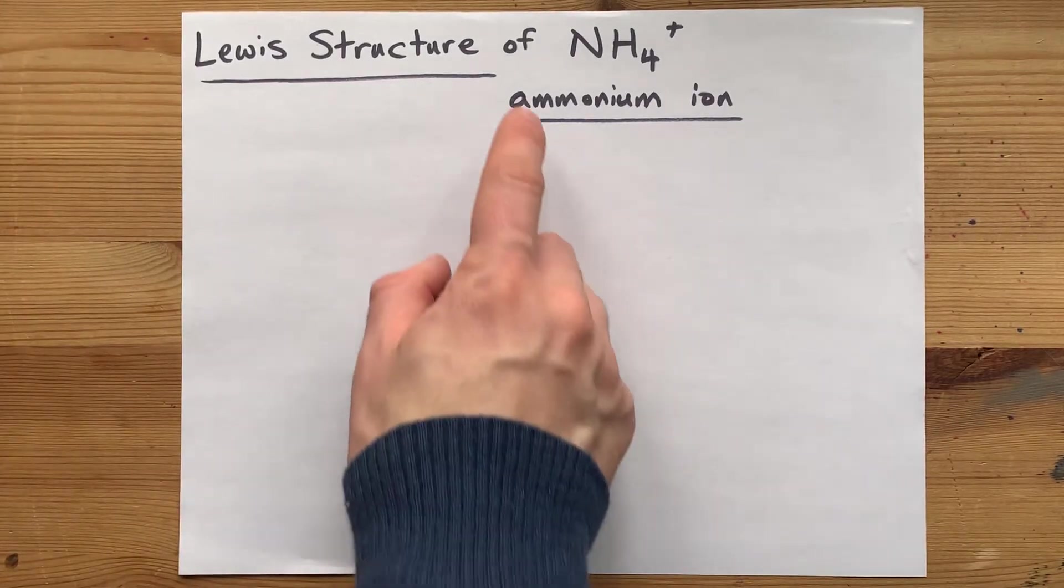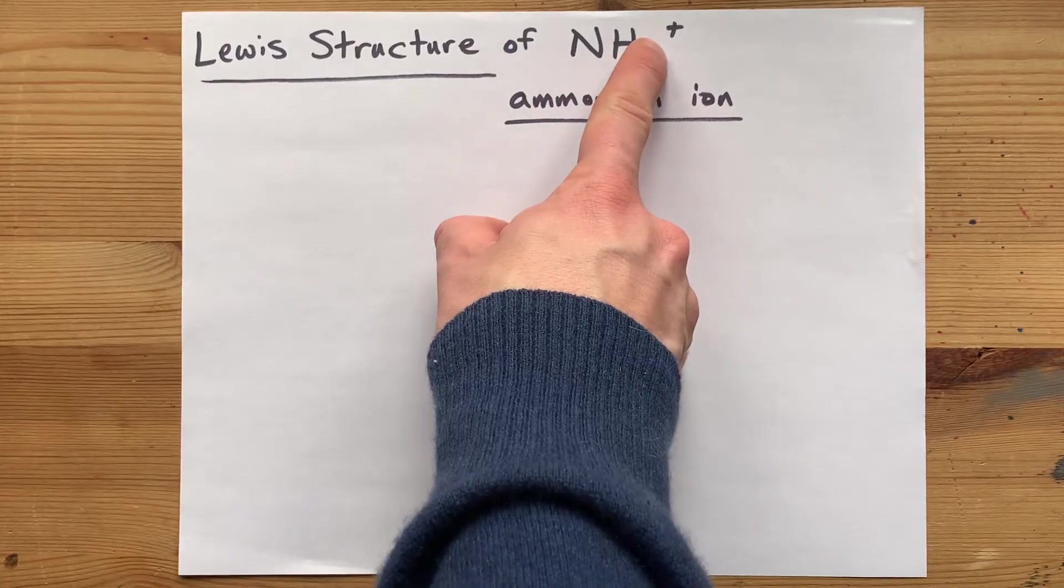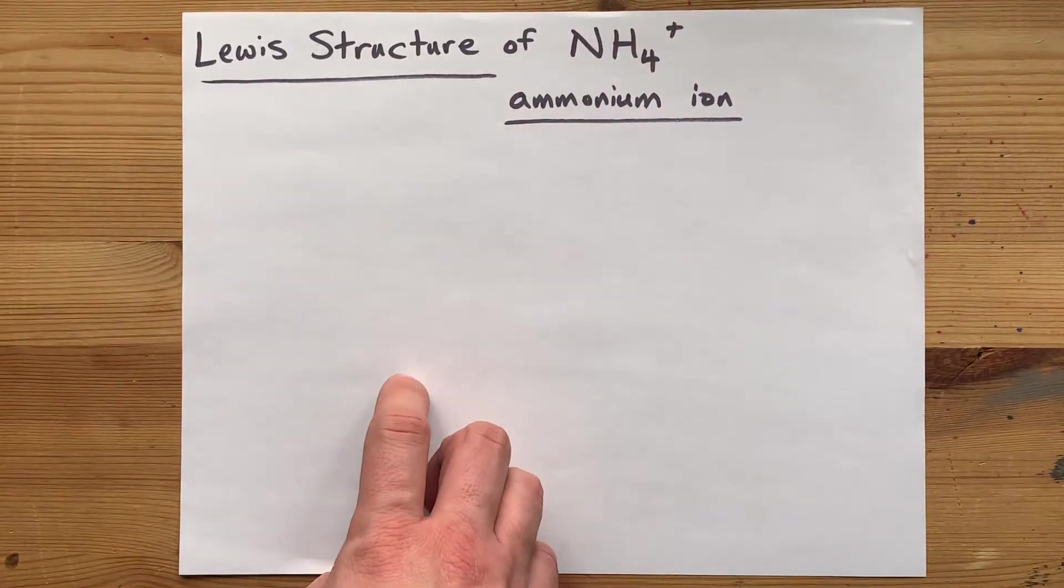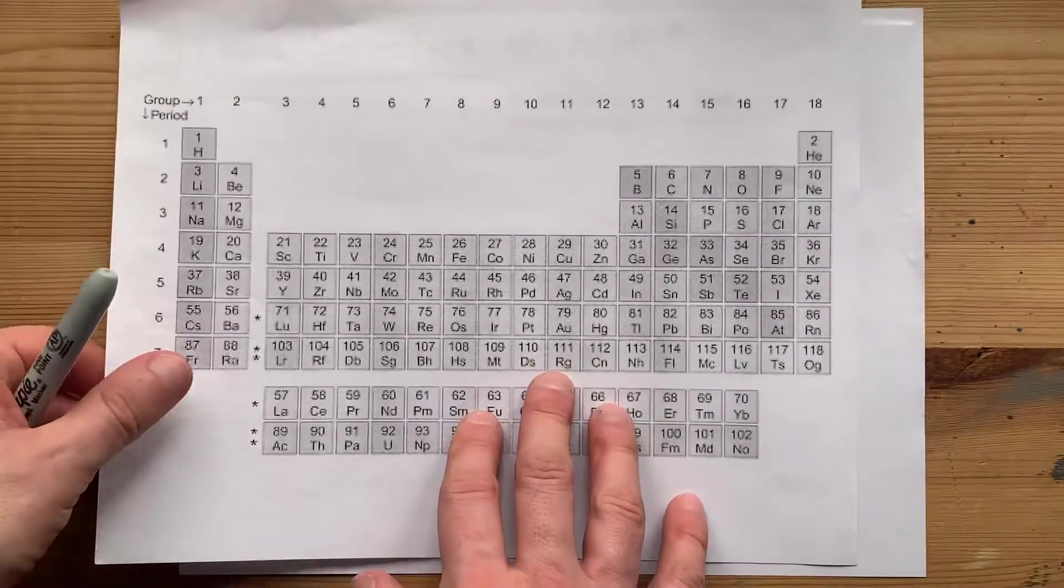Here we will draw the Lewis structure for the ammonium ion. It has a charge of plus one, which means it will have lost one electron from the total that the atoms brought.